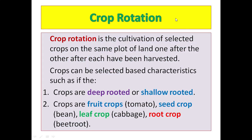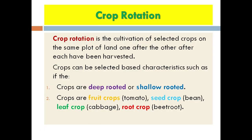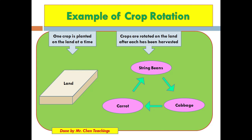Crop rotation is the cultivation of selected crops on the same plot of land one after the other after each has been harvested. Crops are selected based on characteristics such as whether they are deep-rooted or shallow-rooted, or whether they are fruit crops (tomato), seed crops (bean), leaf crops (cabbage), or root crops (beetroot). The diagram shows three types of crops selected based on their parts consumed and rotated on one piece of land.